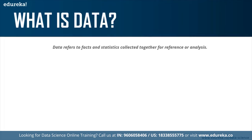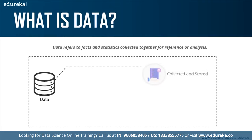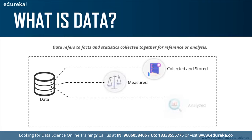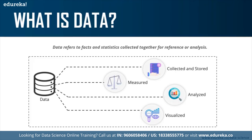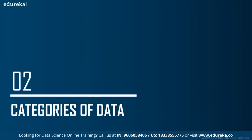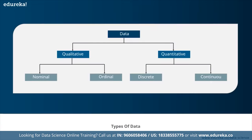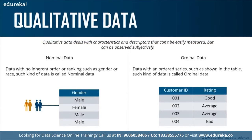Data is divided into two major subcategories: qualitative data and quantitative data. Under qualitative data, we have nominal and ordinal data. Under quantitative data, we have discrete and continuous data. Qualitative data deals with characteristics and descriptors that can't be easily measured but can be observed subjectively. Nominal data is any sort of data that doesn't have any order or ranking — for example, gender (male, female, or other) has no ranking. Race is another example of nominal data.